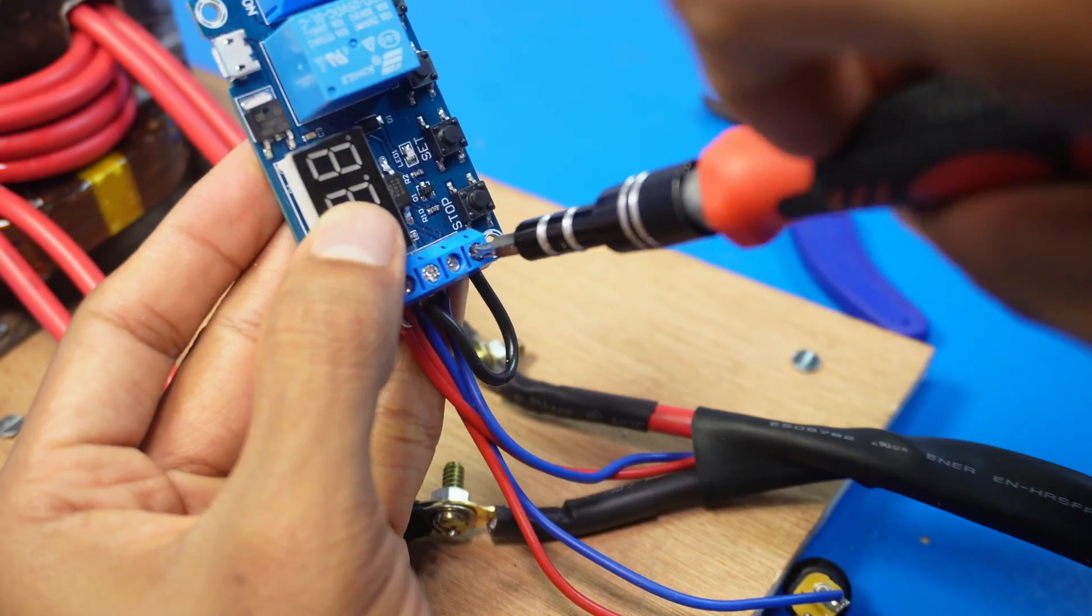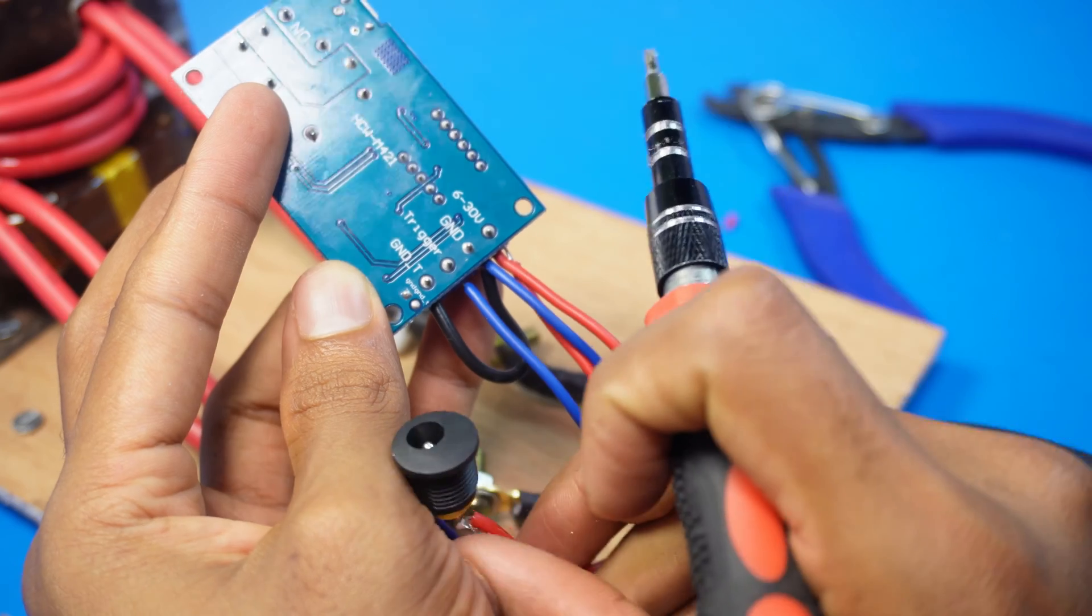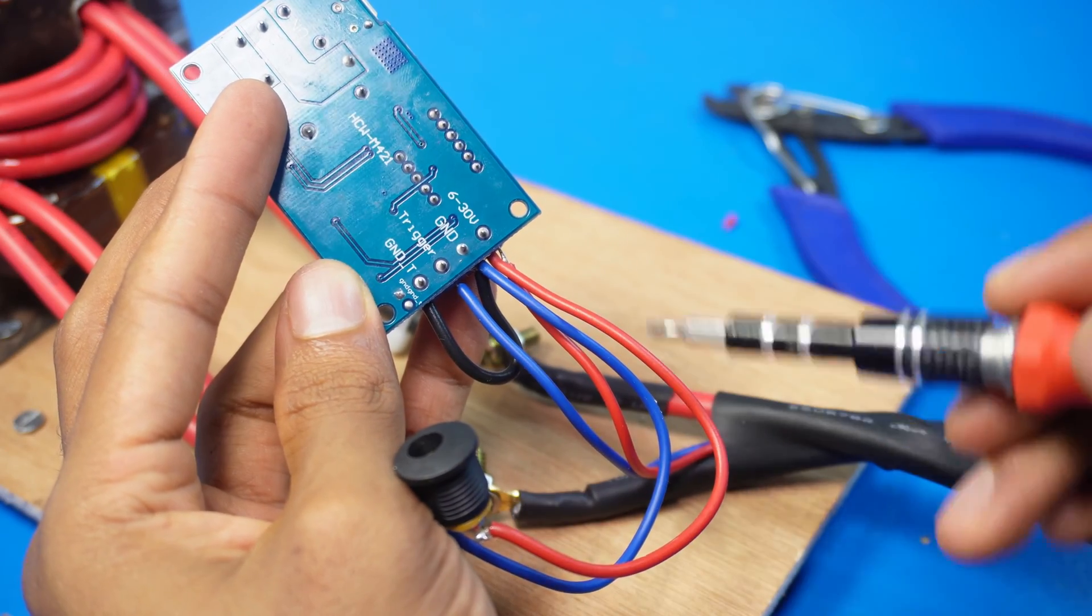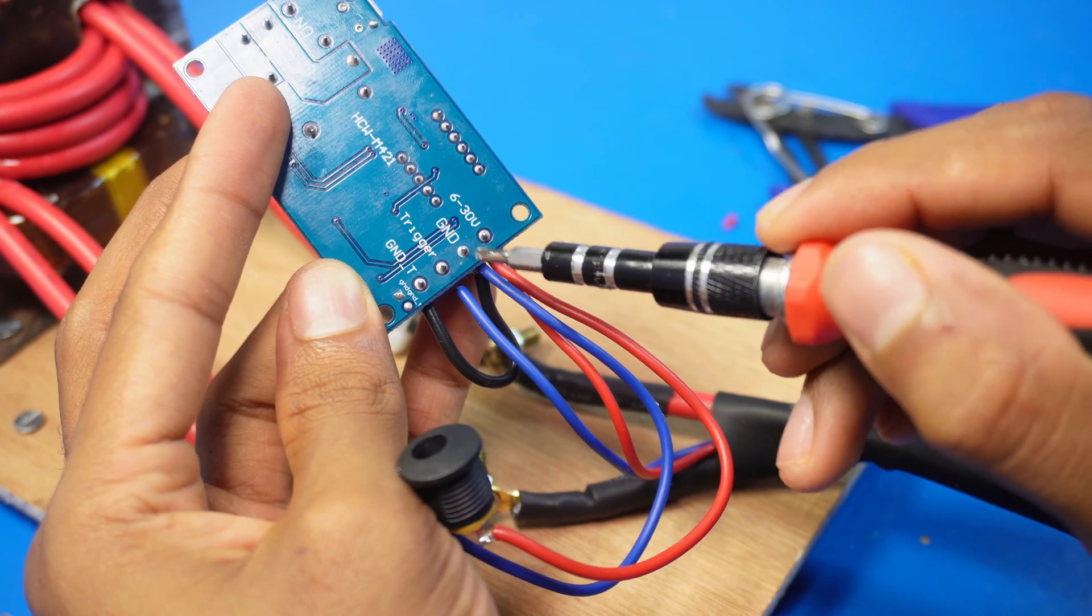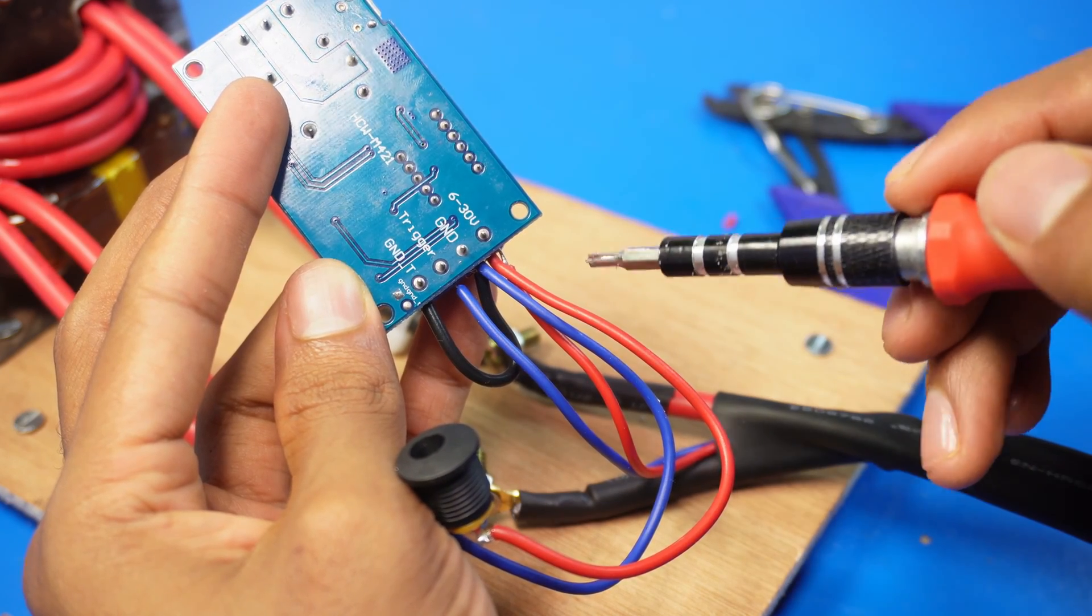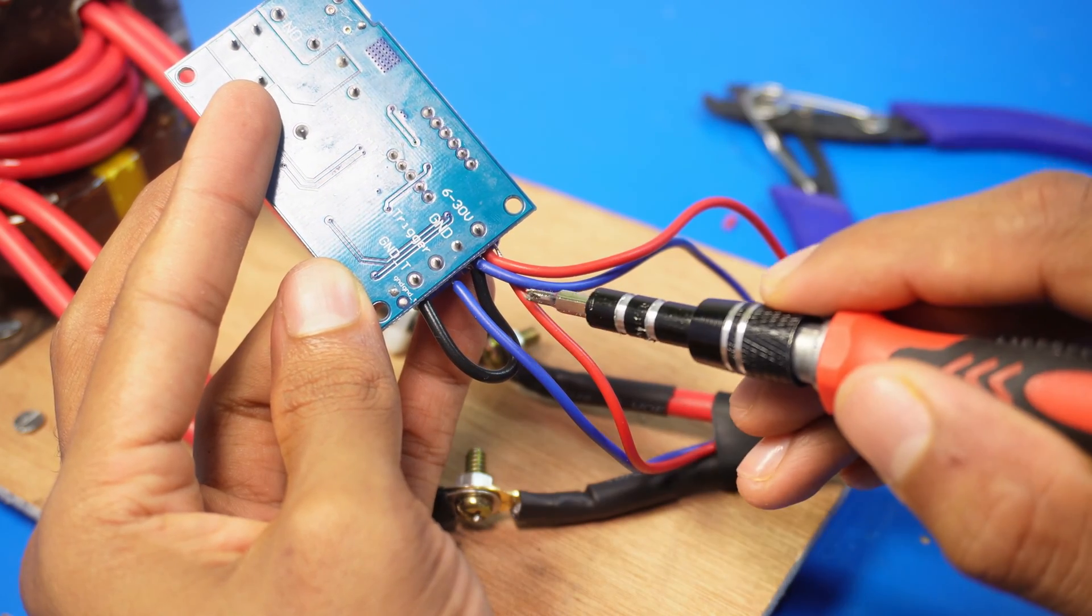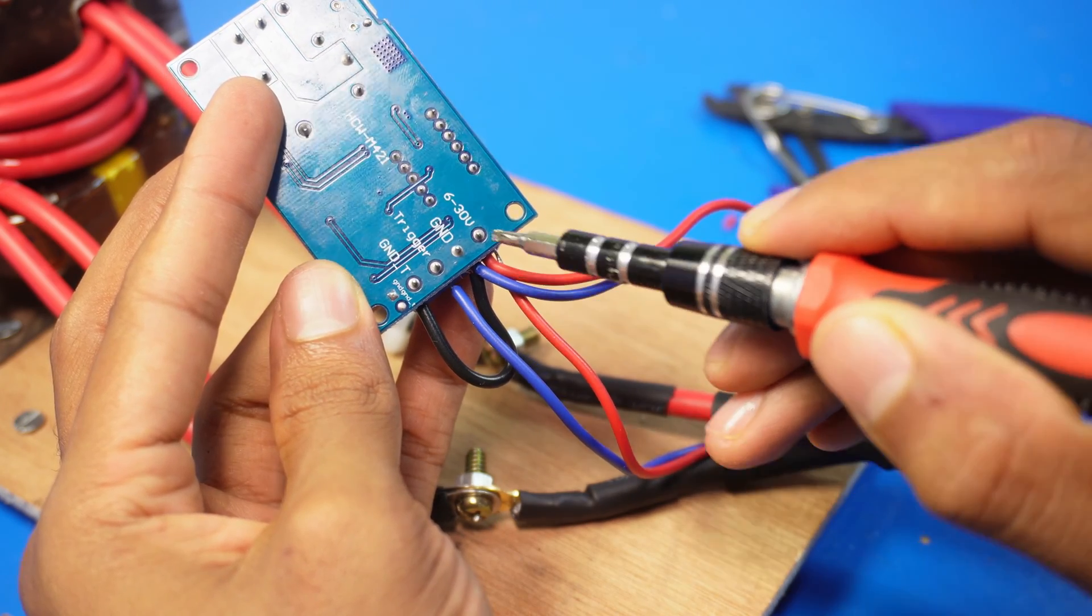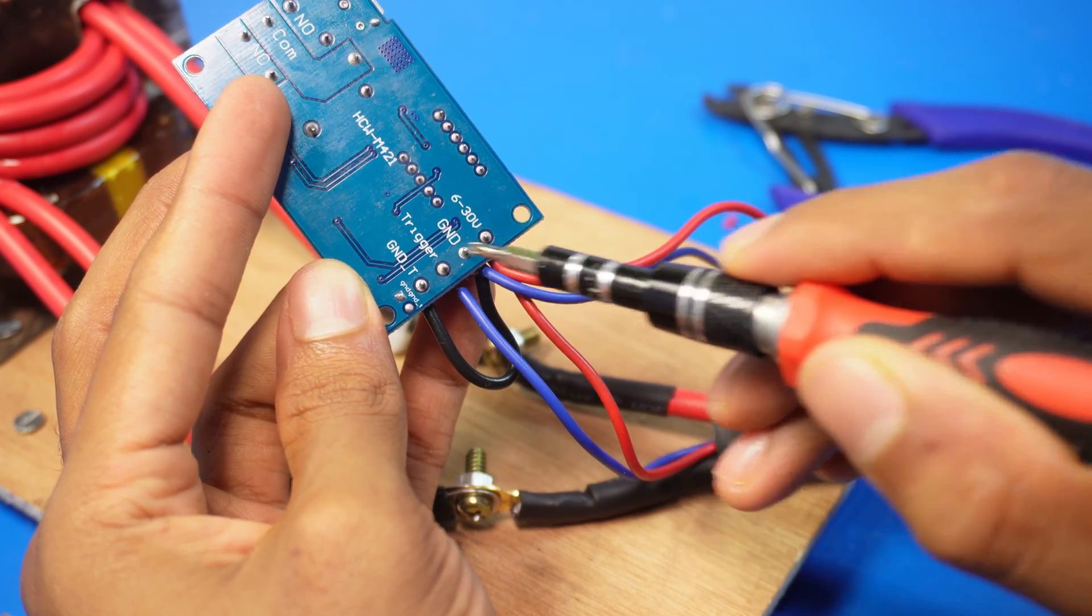This is the final wiring setup. Please ensure you wire it correctly or you will spend a lot of time troubleshooting. Let me show you in detail. Connect the positive of the power source 6V to 30V to the first slot and the negative to the GND or ground slot. The positive of the trigger switch goes to the same 6V to 30V slot and the negative to the slot marked trigger.